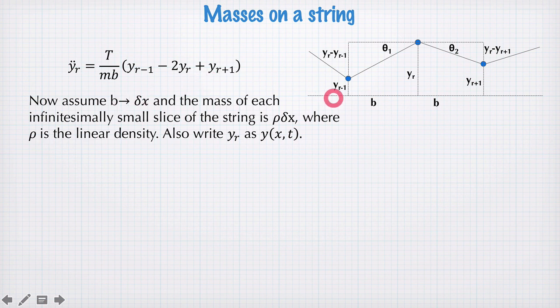What we're going to do now is let b go to δx, so being some small infinitesimal slice of position, and the mass will go to ρδx, so the linear mass times δx. In this way, the amount of mass on the string stays the same, but the masses get closer together as we let δx go towards zero.